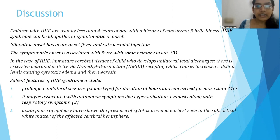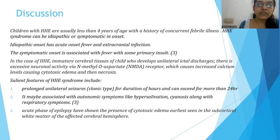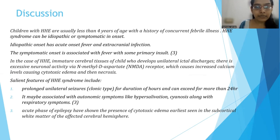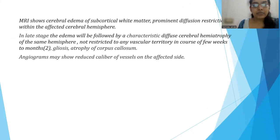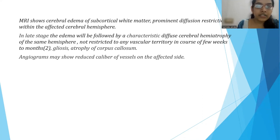Children with HHE syndrome are usually less than four years of age with a history of concurrent febrile illness. This syndrome can be idiopathic with acute onset of fever and extracranial infection, or symptomatic associated with fever with some primary insult. In HHE, the immature cerebral tissue develops unilateral ictal discharges resulting in excessive neuronal activity via NMDA receptors, causing increased calcium levels resulting in cytotoxic edema and necrosis. Salient features include prolonged unilateral adverse seizures possibly associated with autonomic symptoms. The acute phase results in cerebral edema; in late stages, edema is followed by characteristic diffuse cerebral hemiatrophy and gliosis.